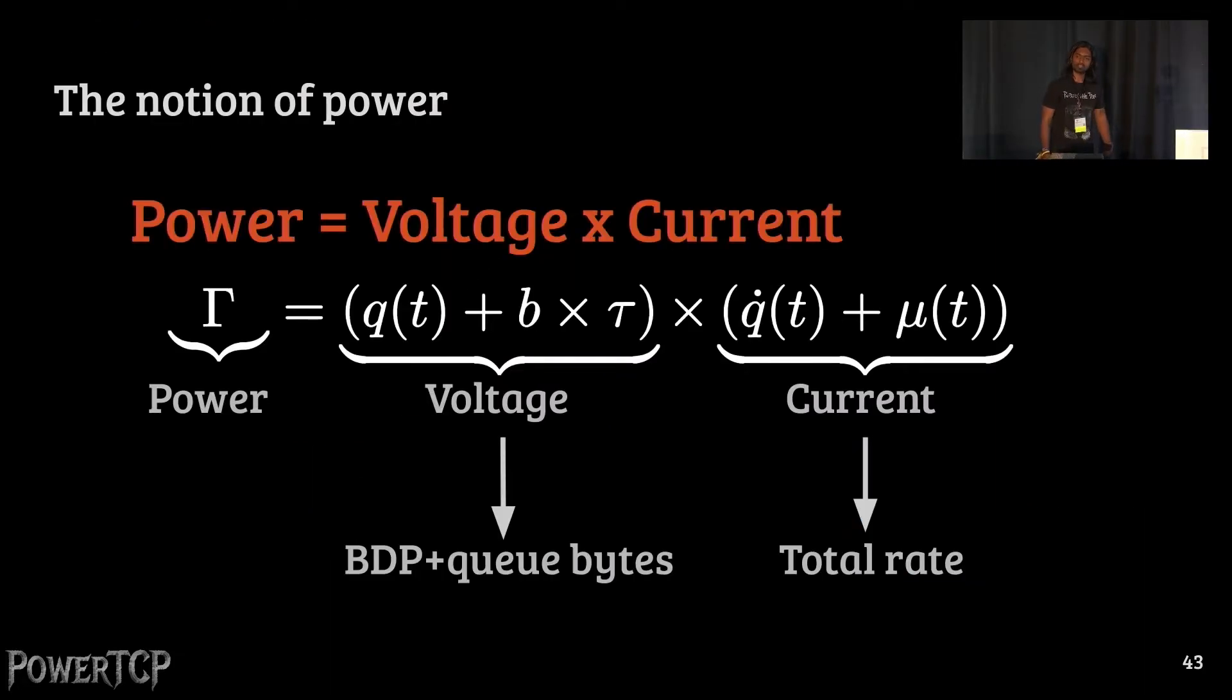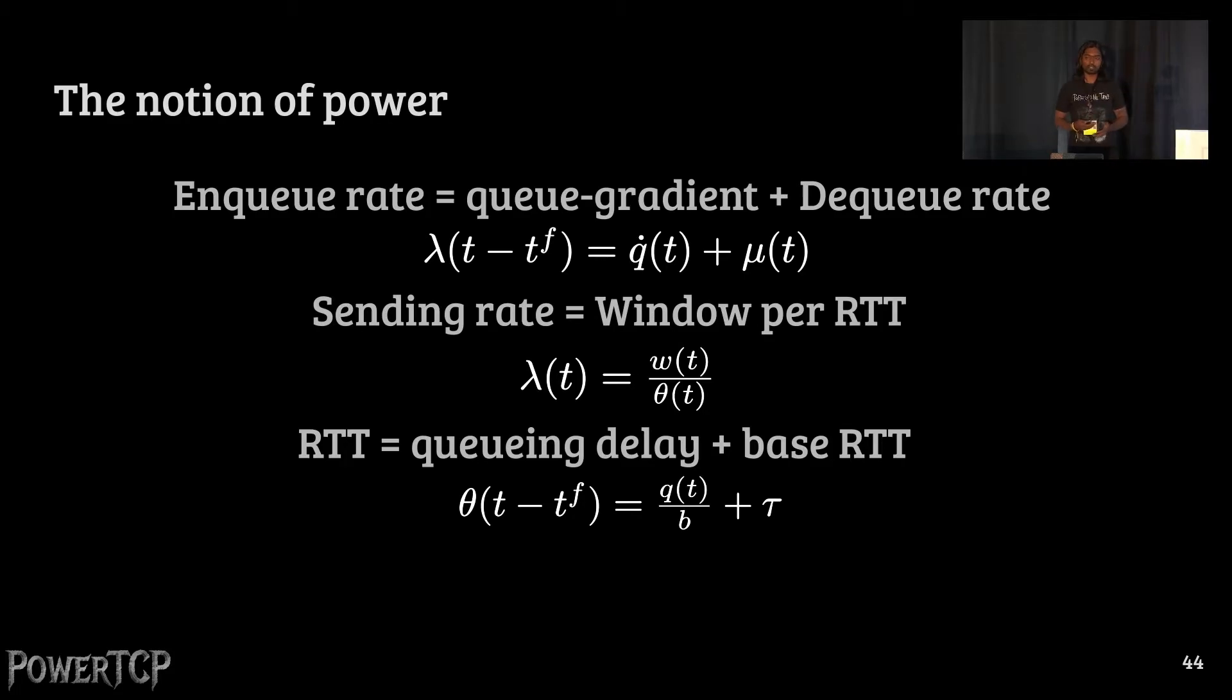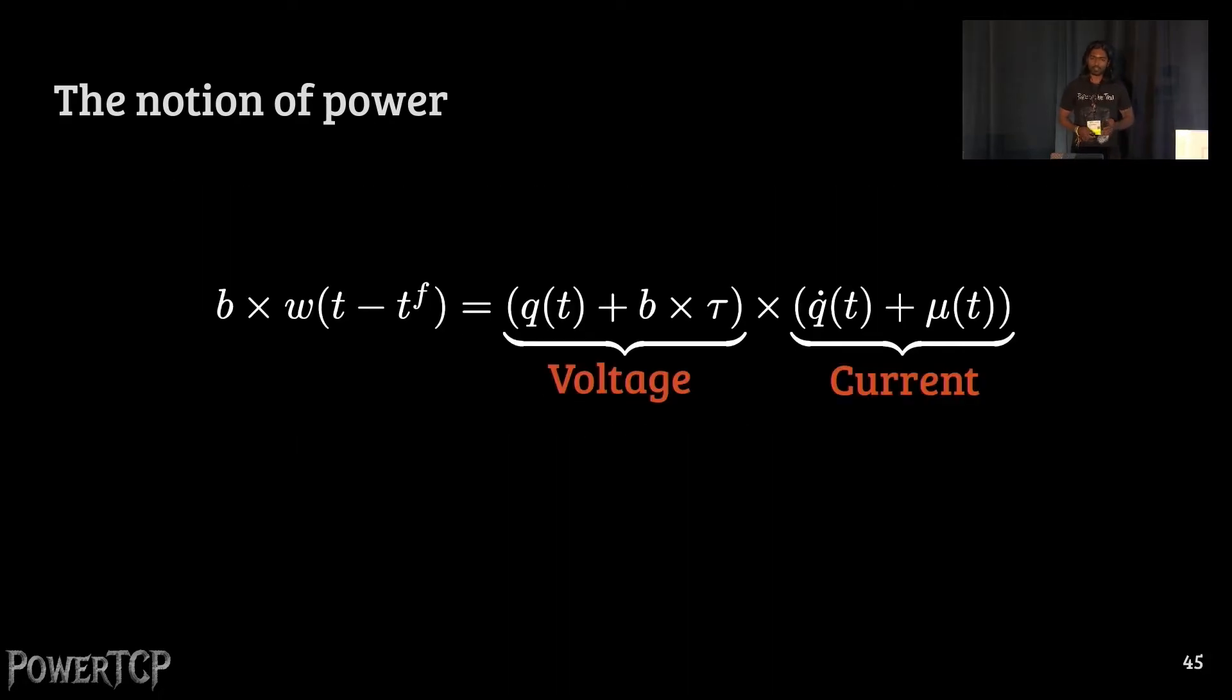As you may have guessed by now, the answer is power, which is the product of voltage and current in the networking setting. To be more precise, this voltage here is the sum of bandwidth delay product and the queue length. Current is the total transmission rate. In other words, the sum of queue gradient and the queue drain rate. While this may sound crazy, why we just multiply voltage and current? In the paper, we do show that using the classical bottleneck model and the classical analysis in the literature, we derive this beautiful relation between sender-side window size on one side and the product of voltage and current on the other side, which is what we define as power.